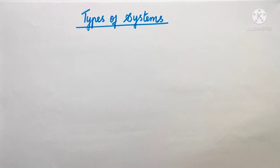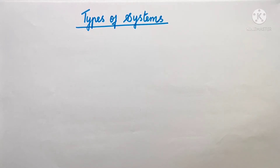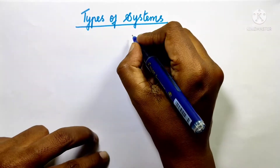Hello students. In this video we will talk about types of systems. The part of the universe which is under consideration is called a system. We will talk about three different types of systems.